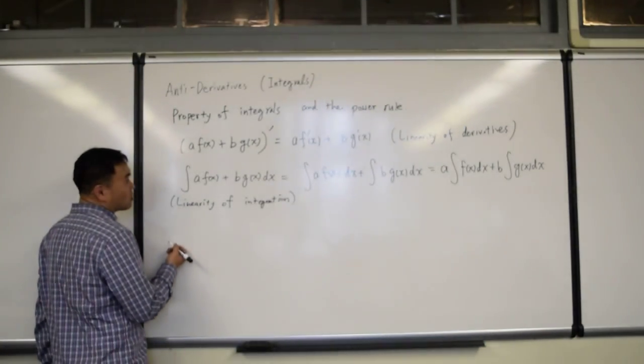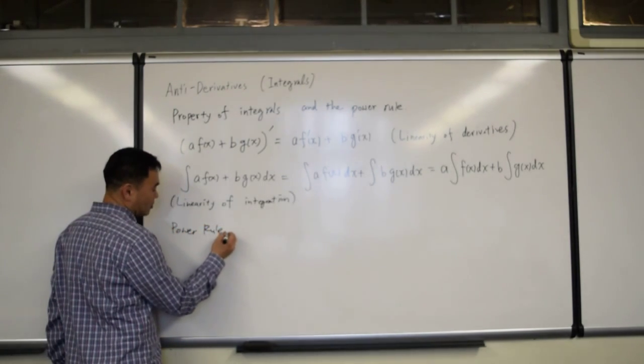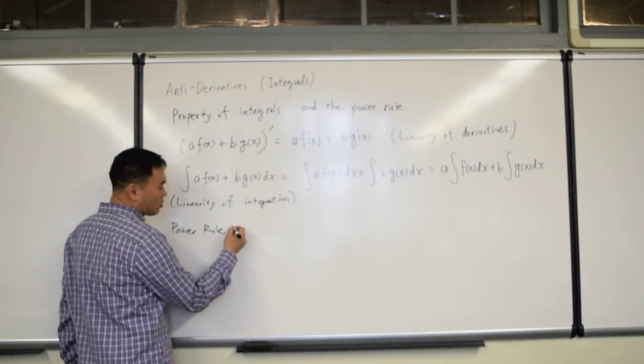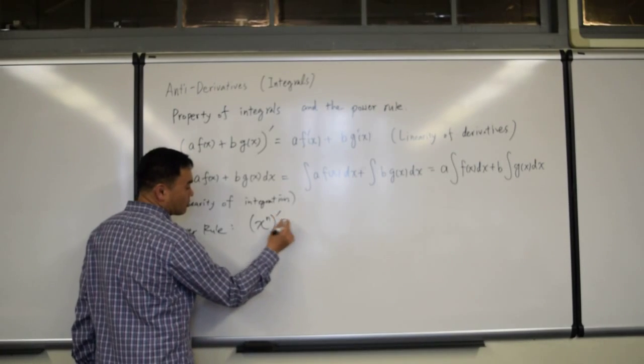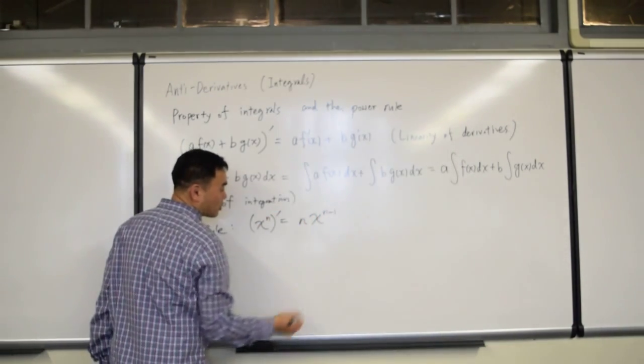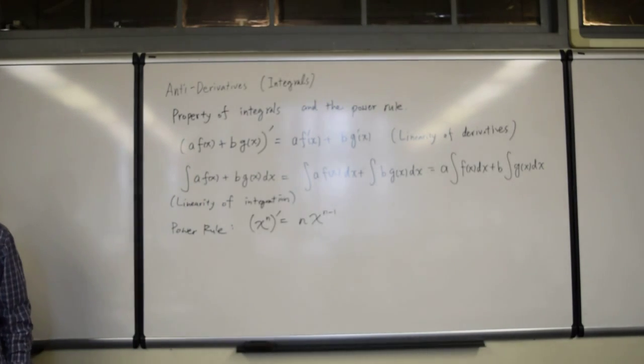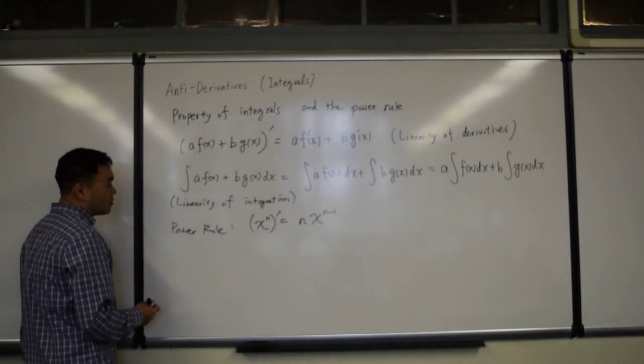What is the power rule for derivatives? Power rule for derivatives is, if you have x to the nth power, if you differentiate, n comes down, steps down, and you subtract one. That's the power rule.